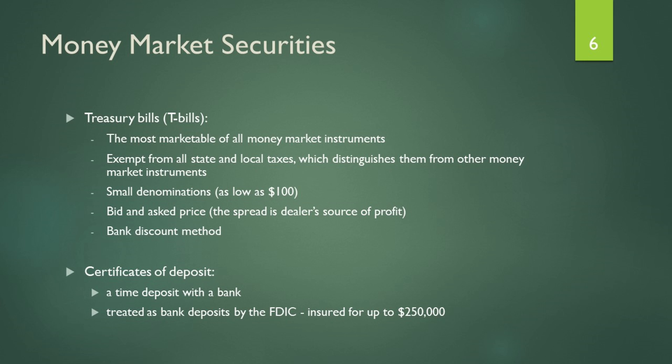Certificates of deposit, or CDs, are like fixed deposits with a commercial bank. These are usually insured by a third party normally controlled by the government for a particular sum. In the US, the FDIC — Federal Deposit Insurance Corporation — insures them for up to a quarter of a million dollars. Similarly, in Malaysia, PIDM does the same.